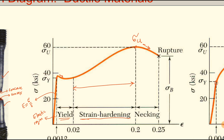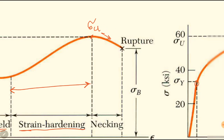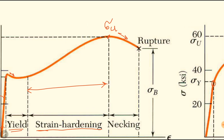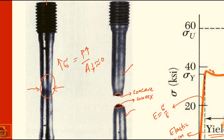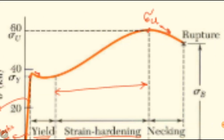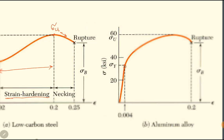After strain hardening there is the necking region, and after necking the material fractures.